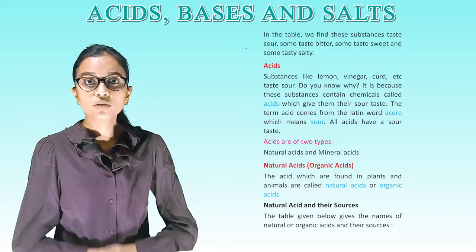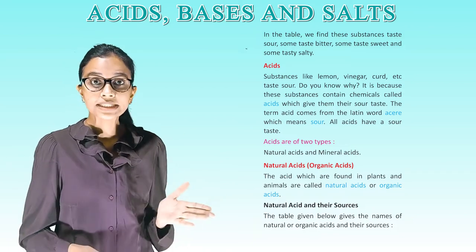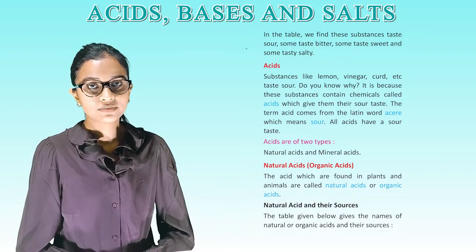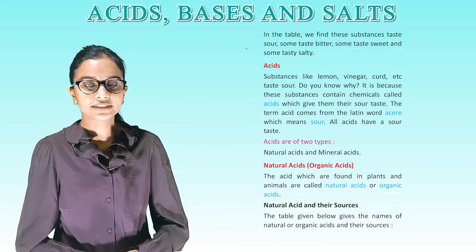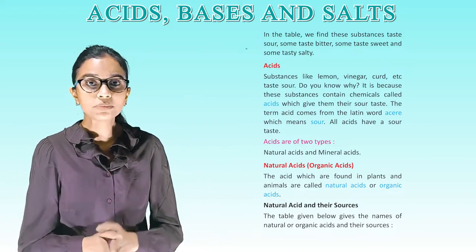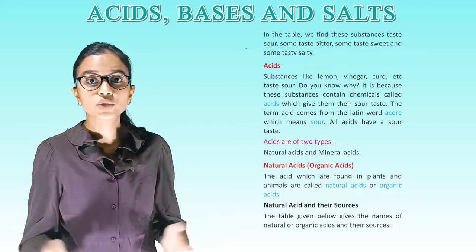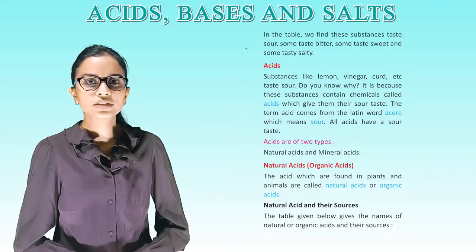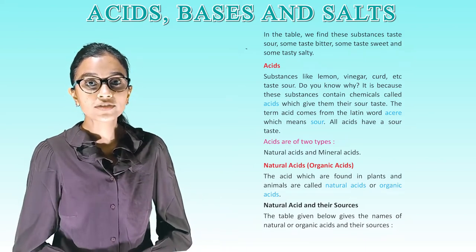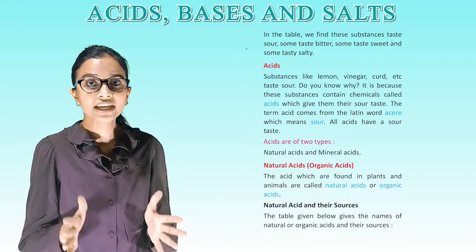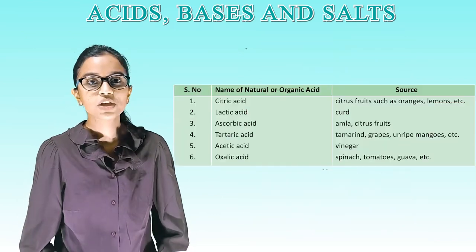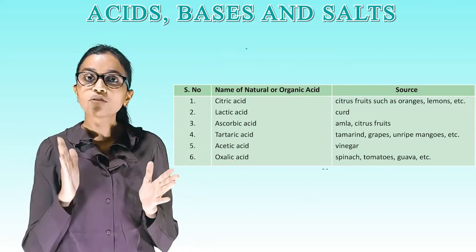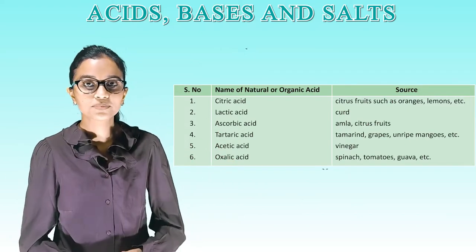Acids are of two types: natural acids and mineral acids. Natural acids — they are organic acids. The acids which are found in plants and animals are called natural acids or organic acids. The table below gives the names of natural or organic acids and their sources. Serial number, name of natural or organic acid, sources.